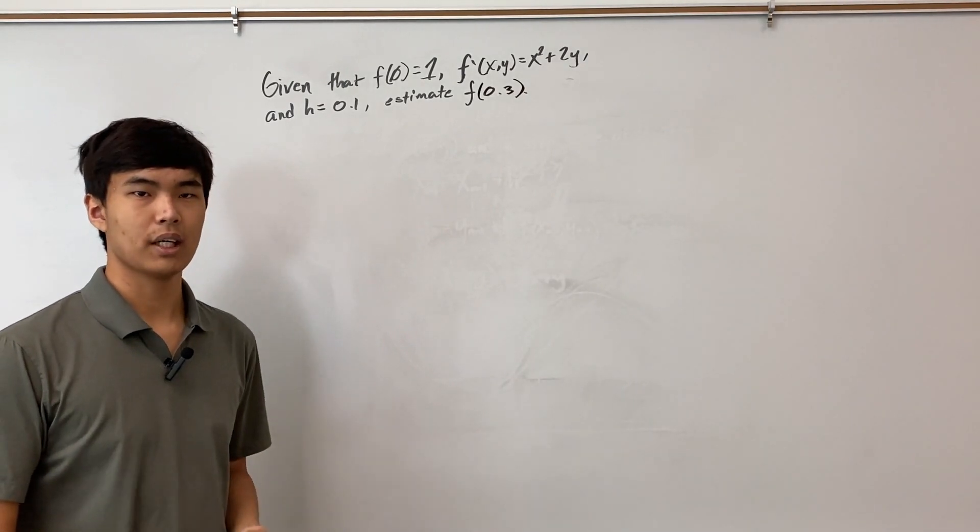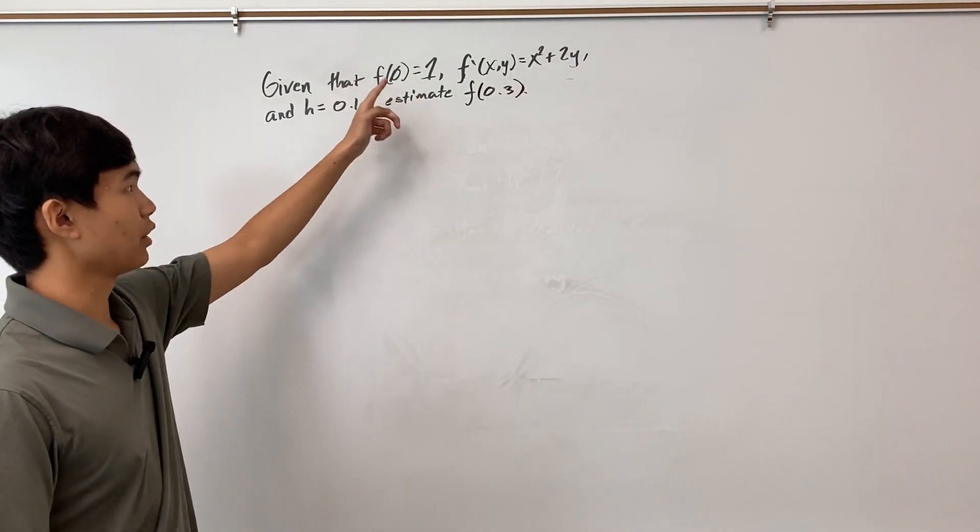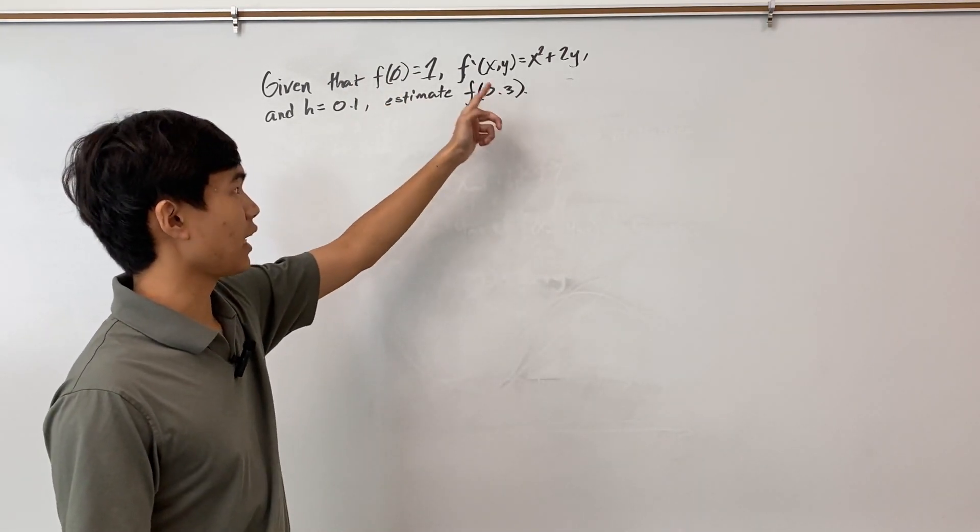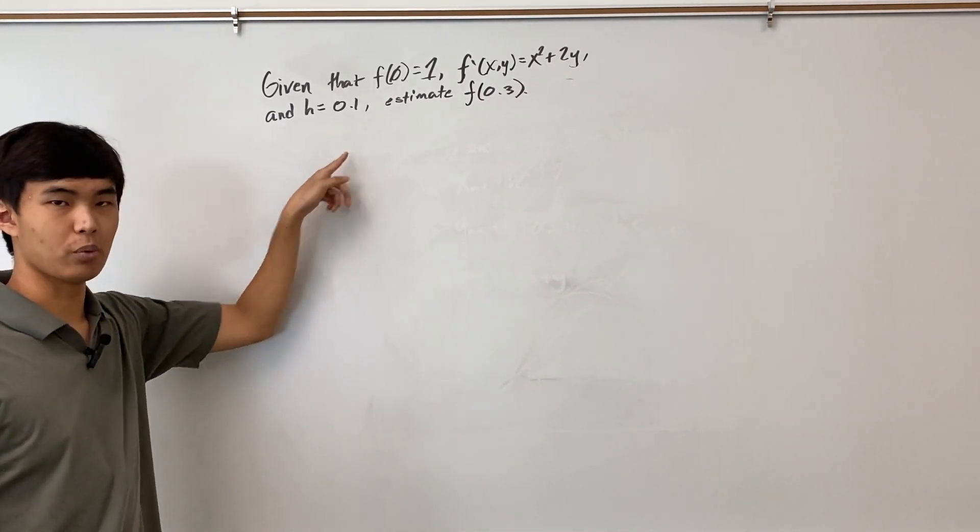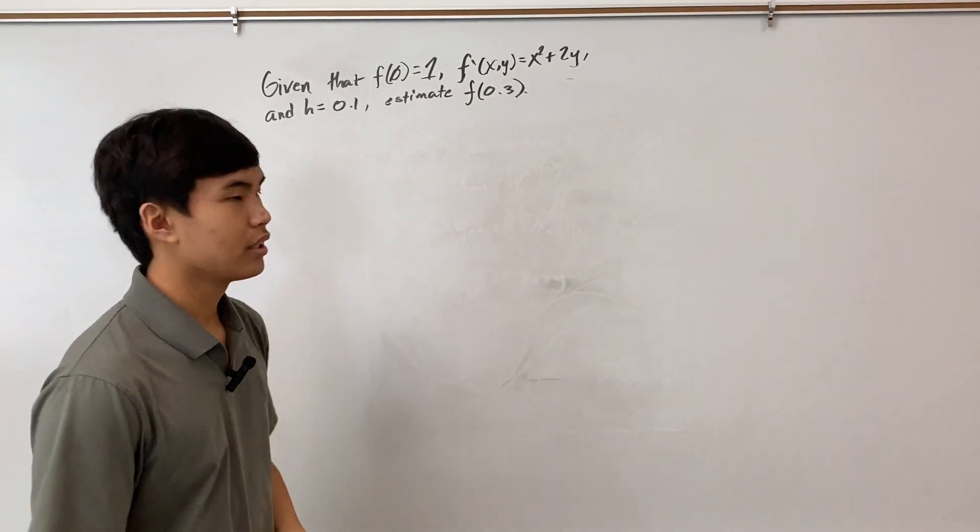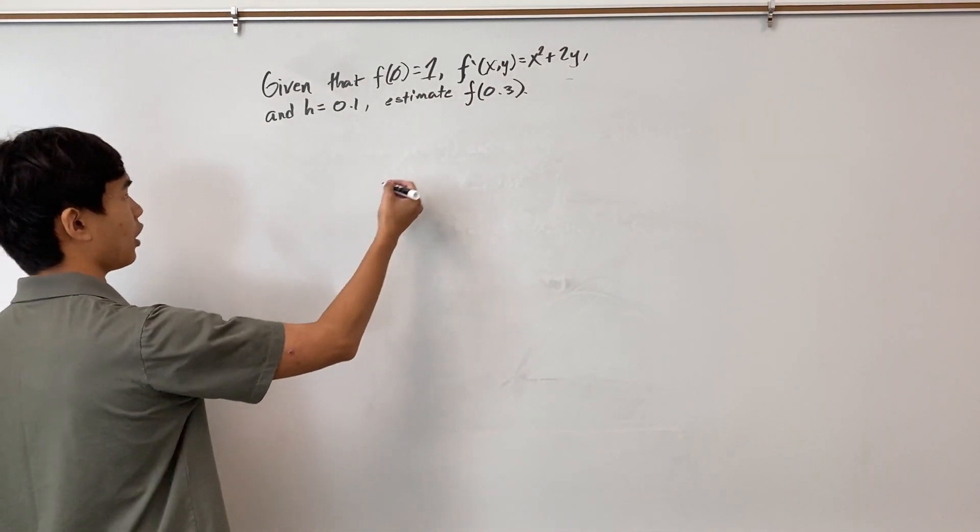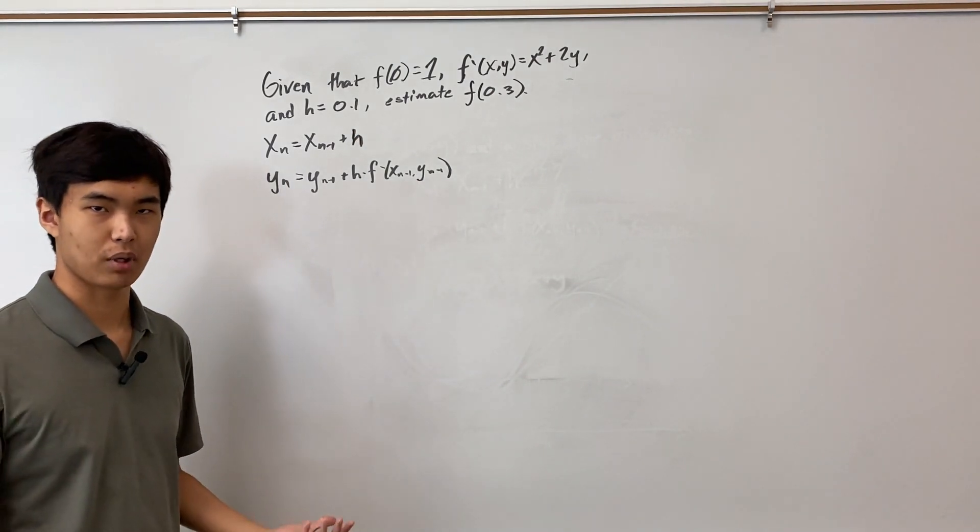To close out the video, I'll do an example for you. So we're given that f(0) = 1, f'(x,y) = x² + 2y. And our step size is 0.1, and we're told to estimate f(0.3). So first, we'll set up our rules, like so. And now we'll begin building our approximation.